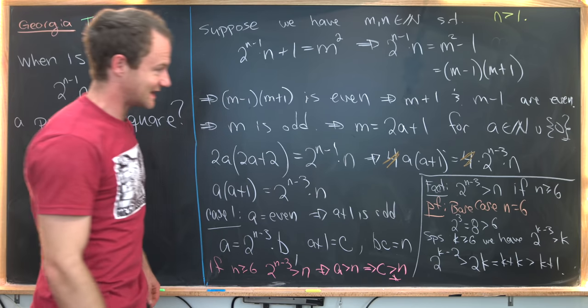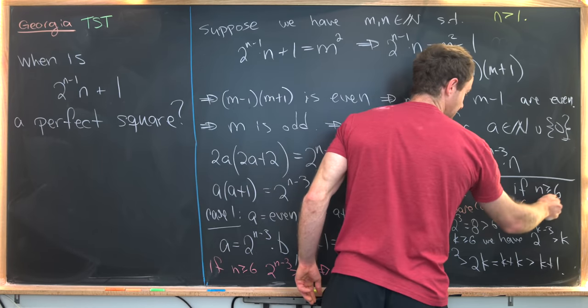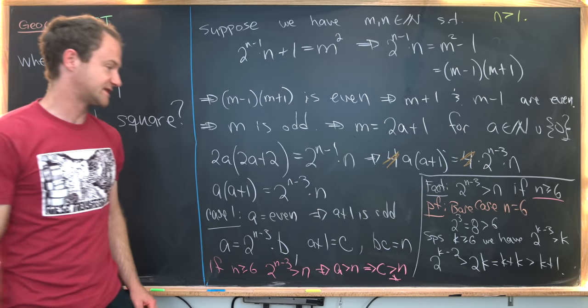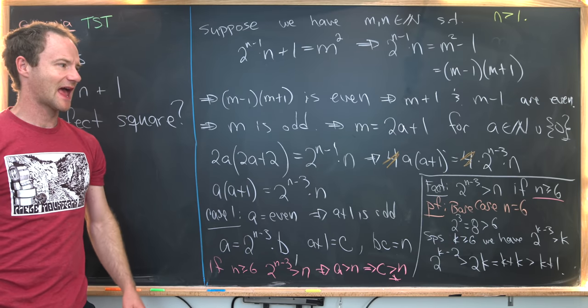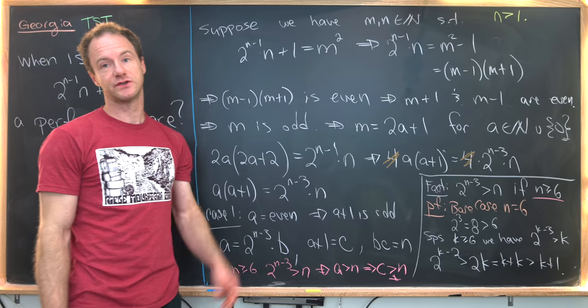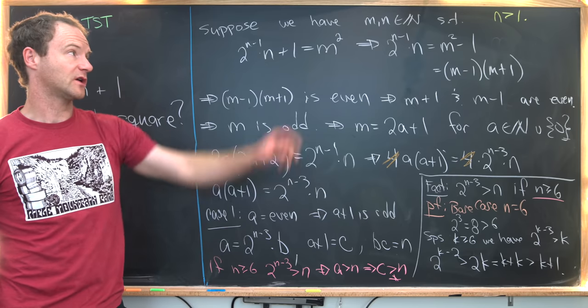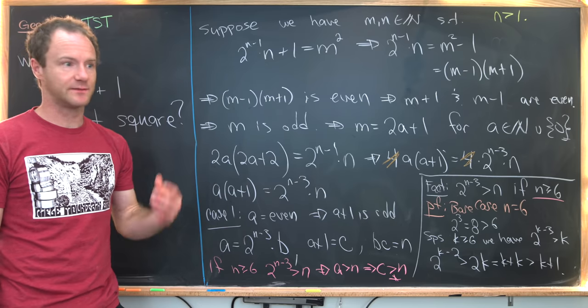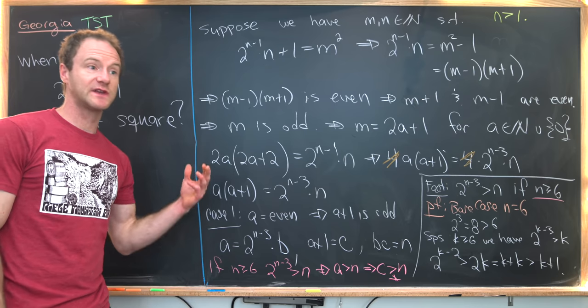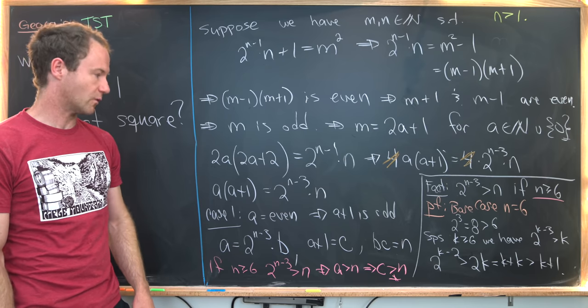So in the end, we see that it is impossible for n to be bigger than or equal to 6, which means that n has to come from the set {1, 2, 3, 4, 5}. We already showed that it can't be equal to 1, so that means n can only possibly be 2, 3, 4, or 5.